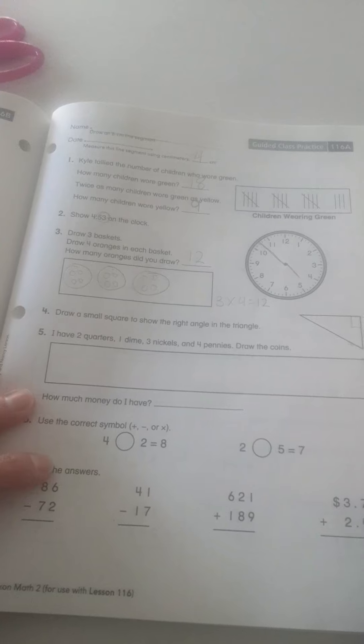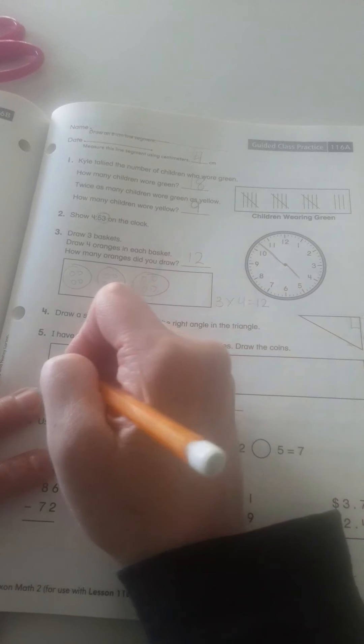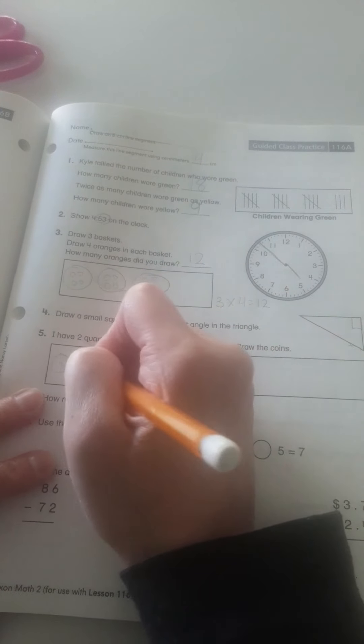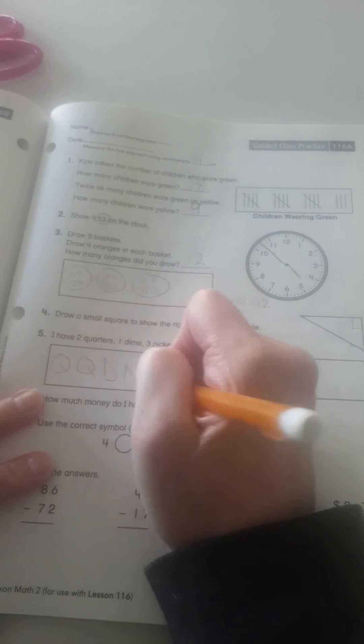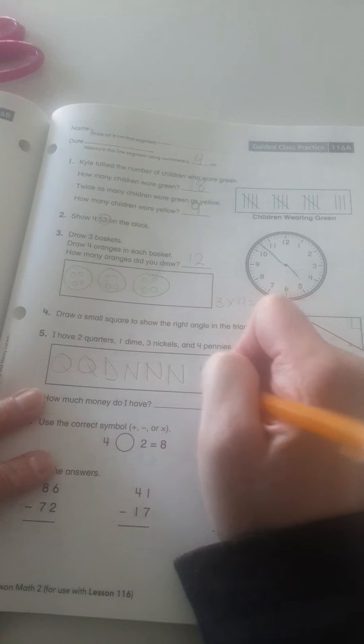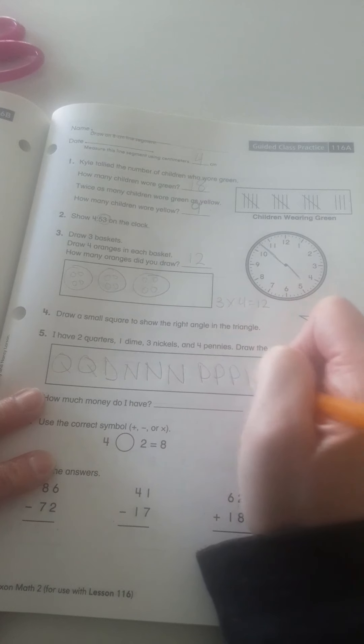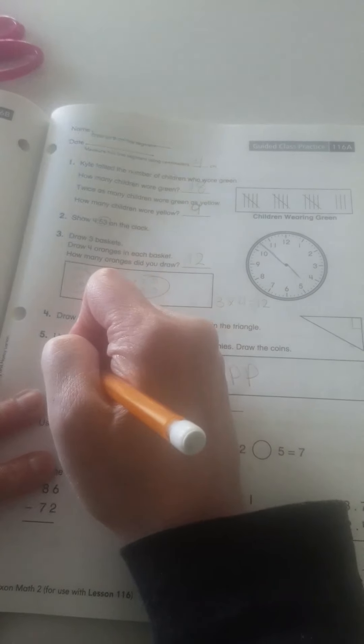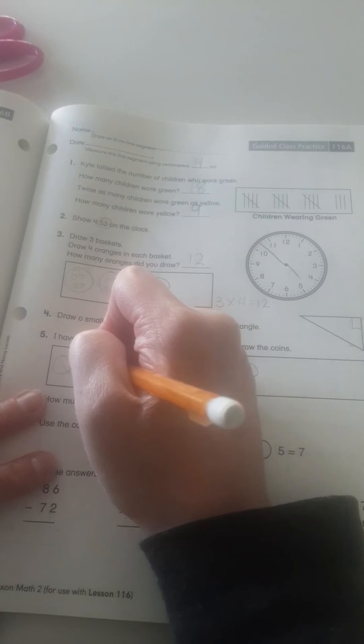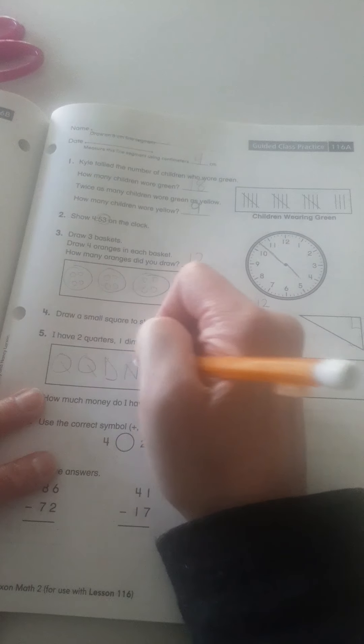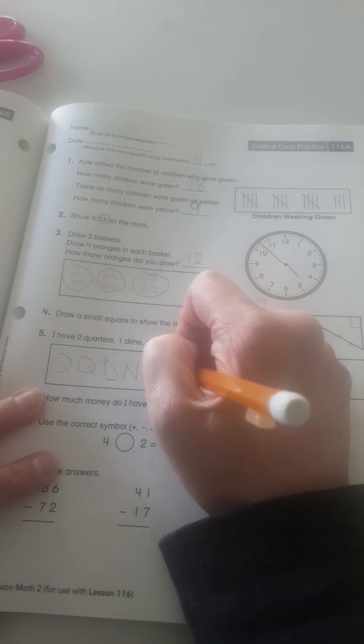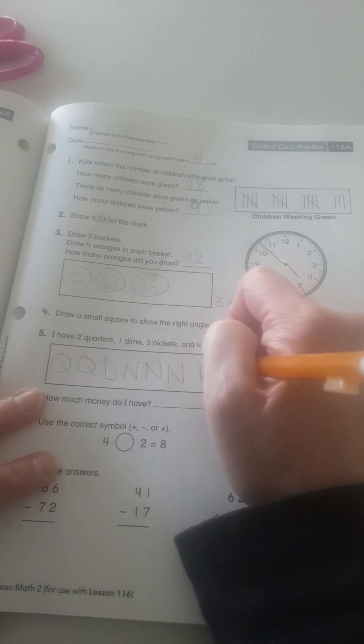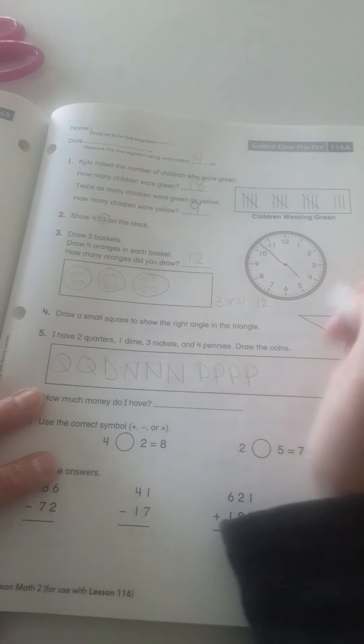Okay. So, I need to draw out my coins. I have 2 quarters, 1 dime, 3 nickels, and 4 pennies. So, 25, 50, 60, 65, 70, 75, 76, 77, 78, 79.